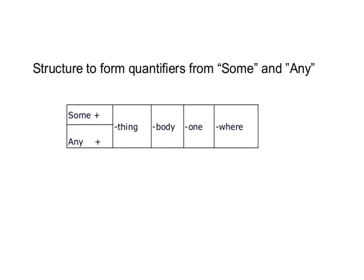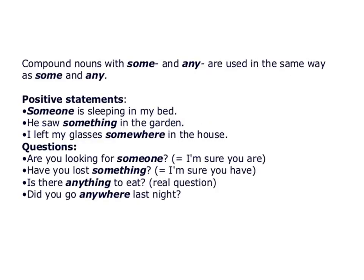Some and any can also form compound quantifiers by adding body, one, thing, or where. From some: something, somebody, someone, somewhere. From any: anything, anybody, anyone, anywhere. Compound quantifiers made from some are used in a positive sense; those made from any are used in a negative sense. 'Someone is sleeping in my bed' — positive certainty. 'Is there anything to eat?' — implies nothing is left. 'Did you go anywhere last night?' — expected answer is no.